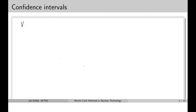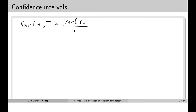In the previous mini lesson we derived a very important result that I would like to review now. We derived that the variance in the mean value of the Monte Carlo simulation result is equal to the variance of the random variable divided by the number of samples. I would like to make sure we understand the difference between these two values: the variance of the mean value of our result, and the variance of the random variable we are trying to calculate.